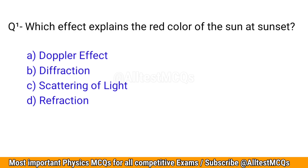Q1. Which effect explains the red color of the sun at sunset? The correct option is C: Scattering of light.